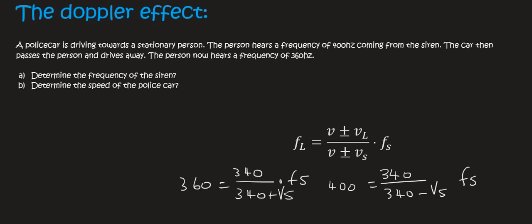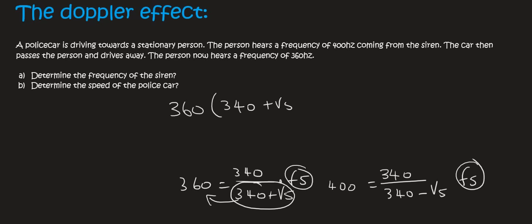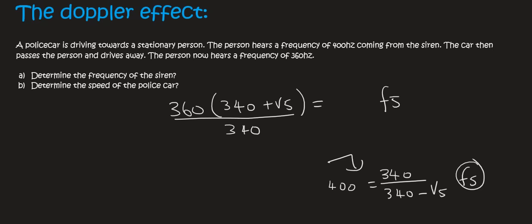So what I'm going to do - there's various ways of doing this, but I'm going to get Fs by itself in both of these equations. So for the first one, to get Fs by itself, you're going to have to multiply this part up to the left. And so we're going to end up with 360 times 340 plus Vs equals 340 Fs. To get Fs by itself, you then have to divide by 340. I'm now going to do the same with this equation, and so that's eventually going to end up with 300 times 340 minus Vs over 340 equals Fs.